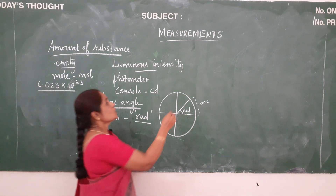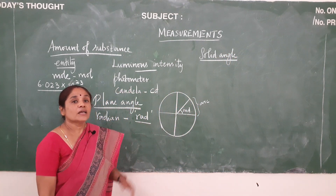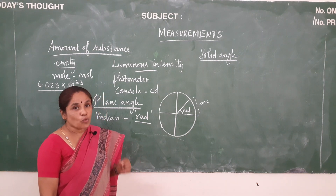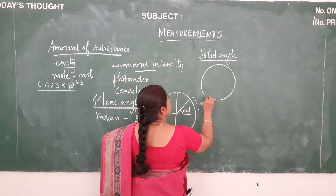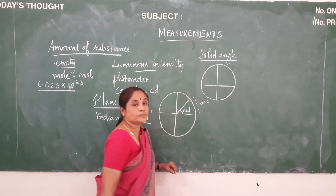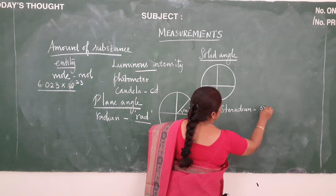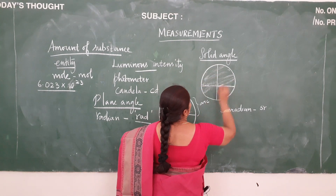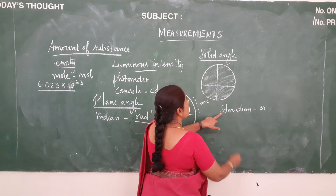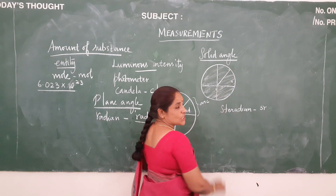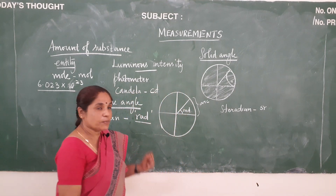We will move on to the next topic: solid angle. Solid angle is nothing but the angle formed by the intersection of three or more planes at a common point. The SI unit for solid angle is steradian and it is denoted by sr. This is a sphere. Steradian is nothing but the angle subtended at the centre of the sphere whose surface area is equal to the square of the radius of the sphere.